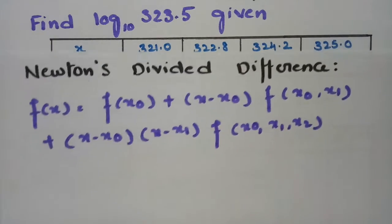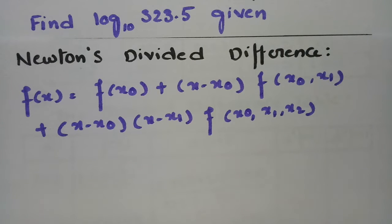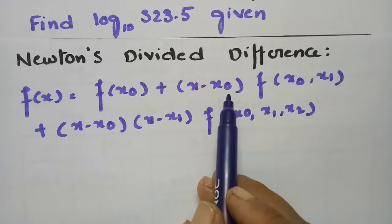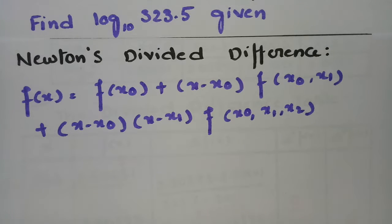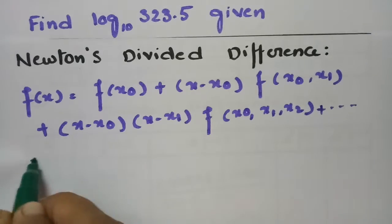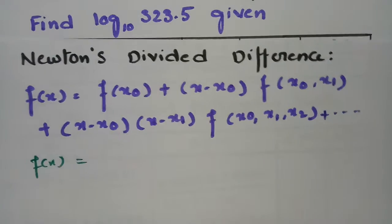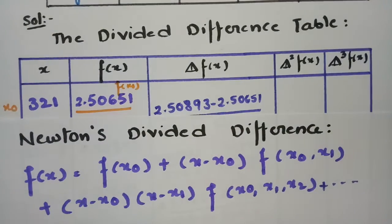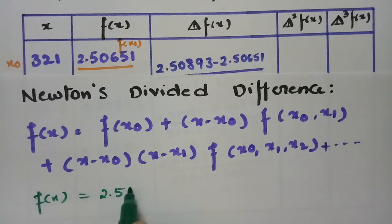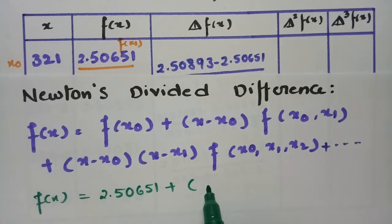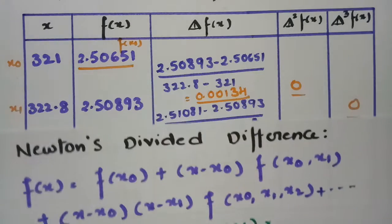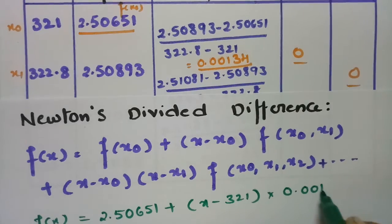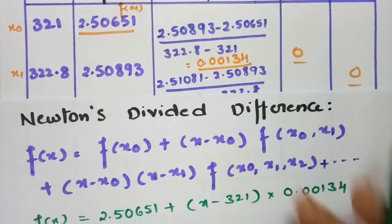The Newton divided difference formula is: f(x) = f(x₀) + (x − x₀)·f[x₀,x₁] + (x − x₀)(x − x₁)·f[x₀,x₁,x₂] + ... Substituting our values: f(x₀) = 2.50651, x₀ = 321, the first divided difference is 0.00134, and all higher divided differences are 0.